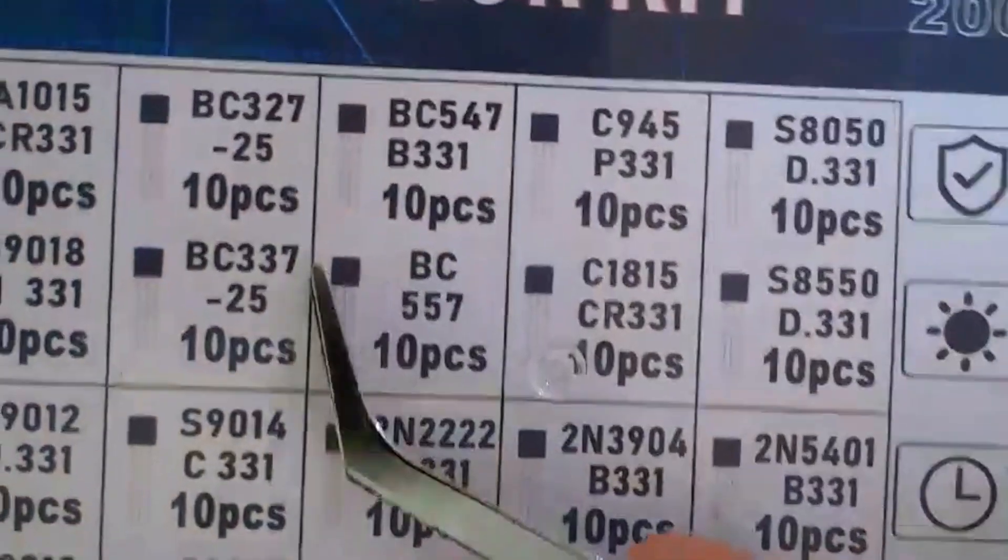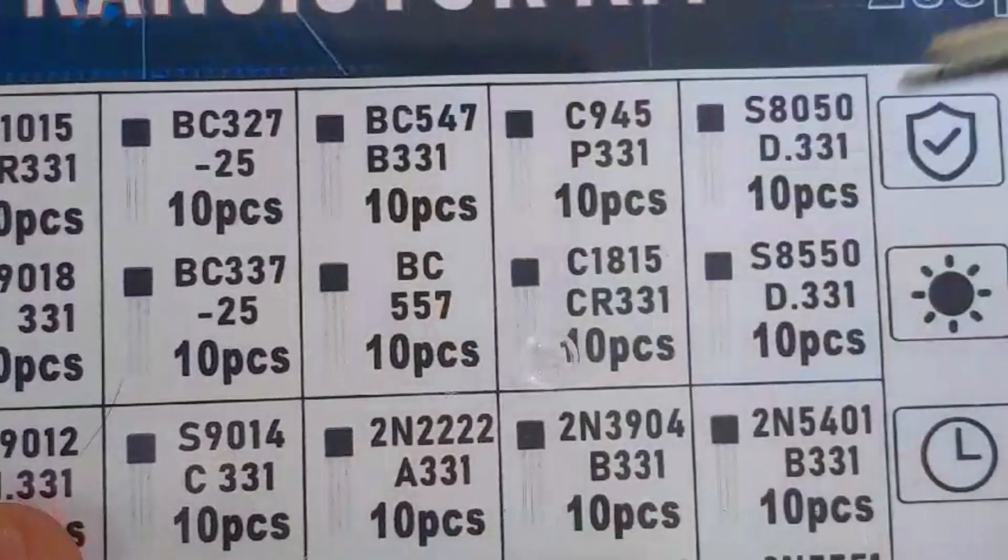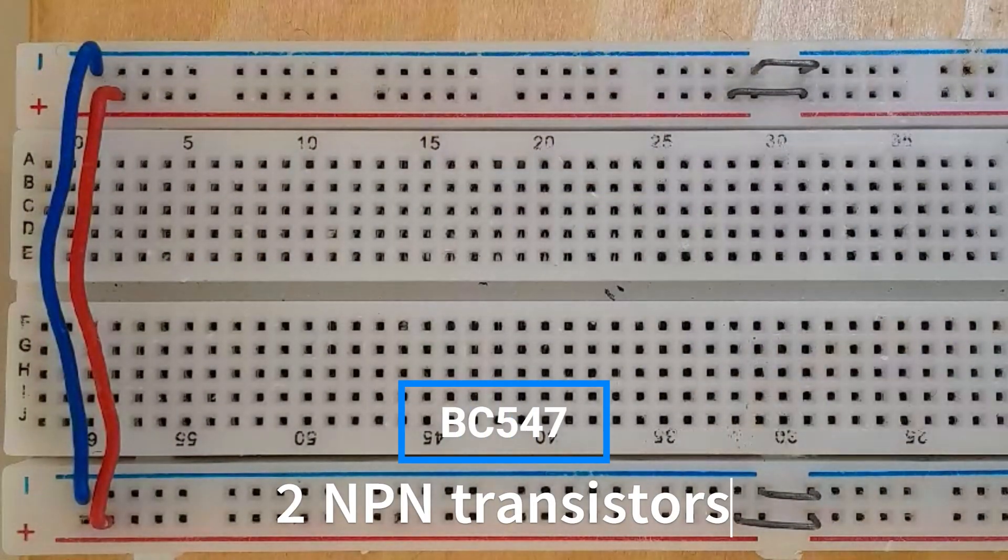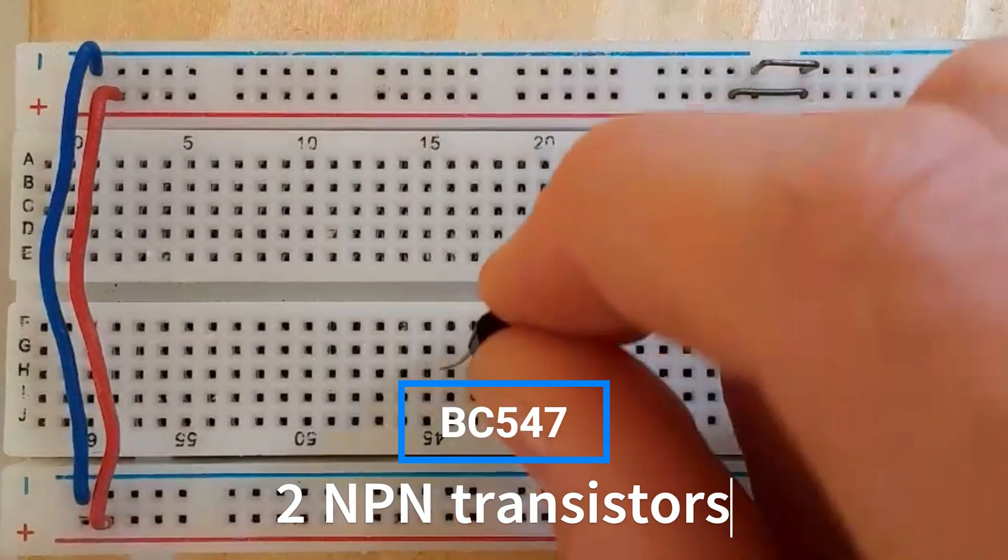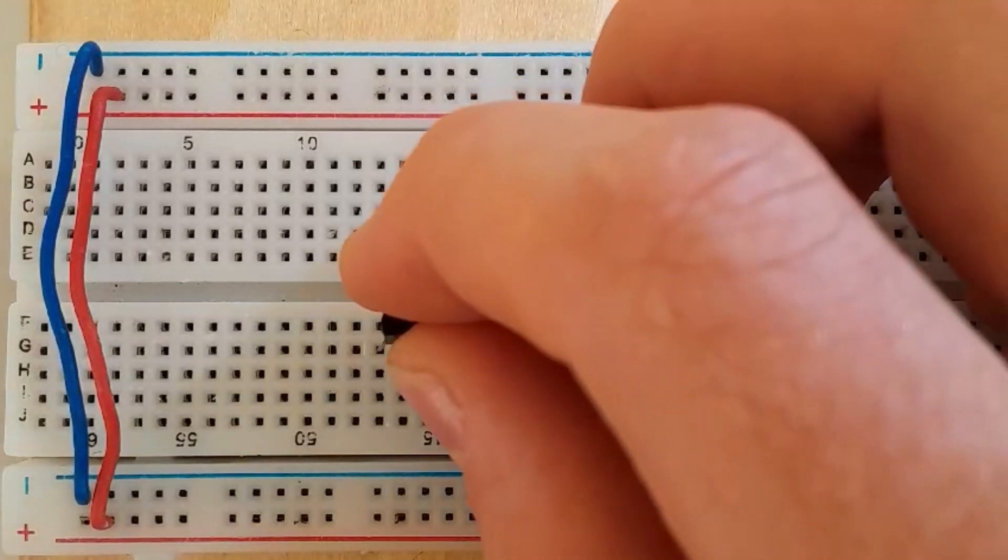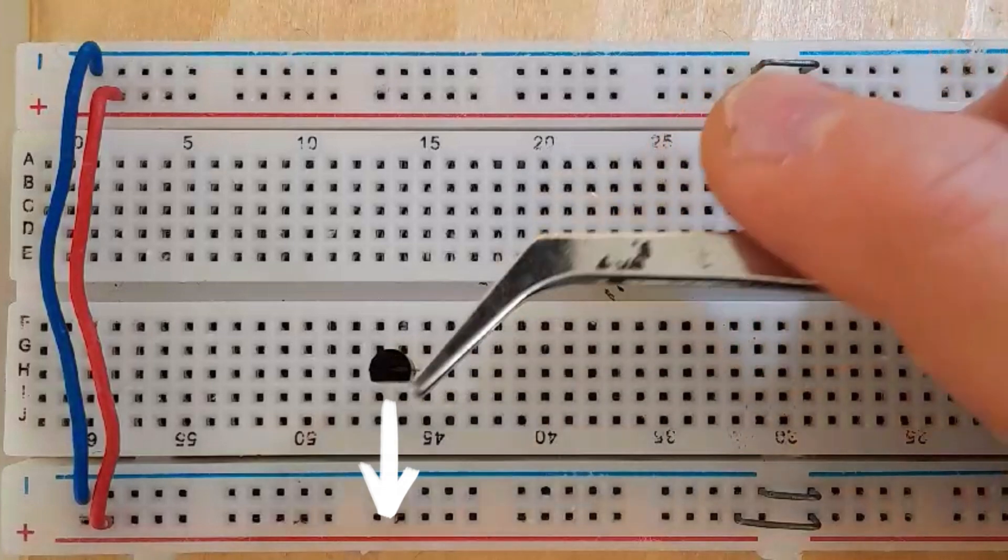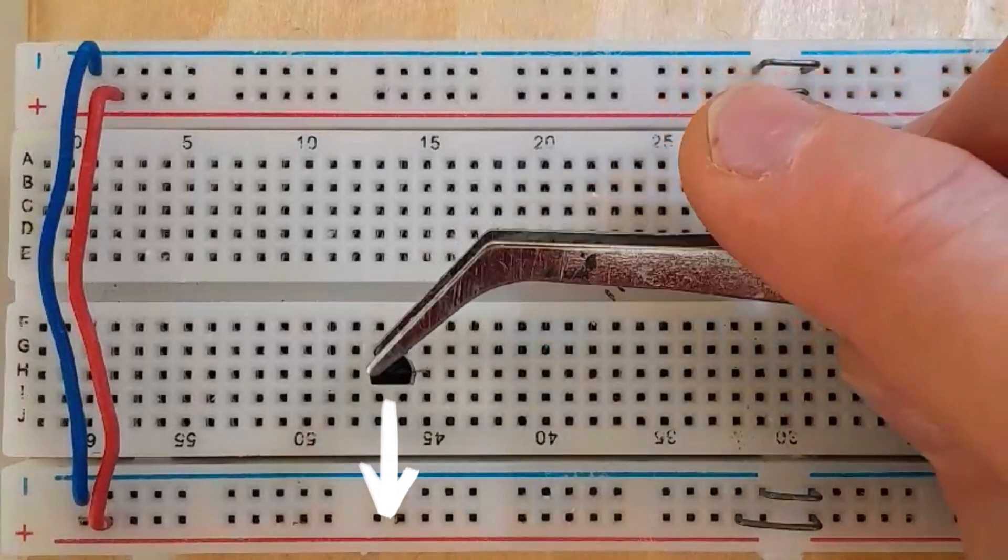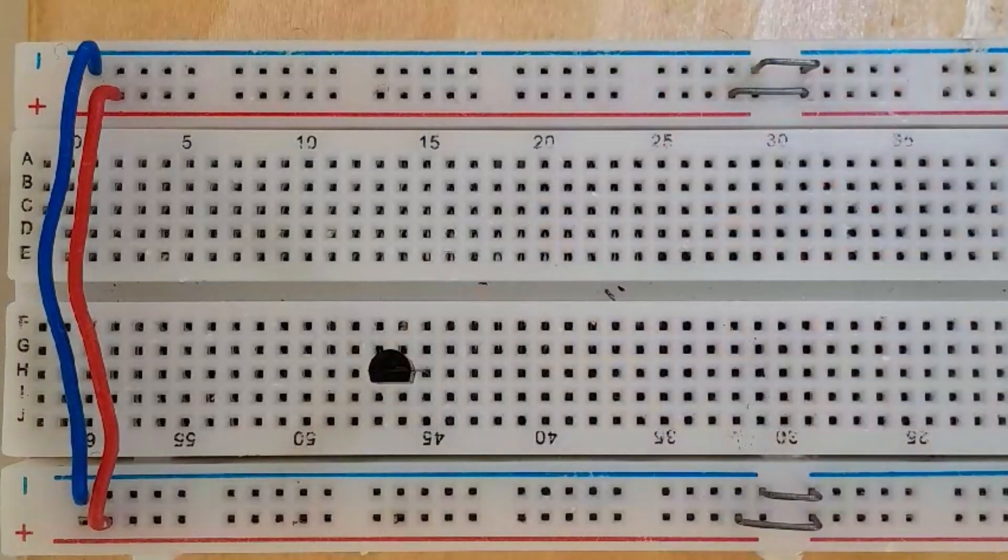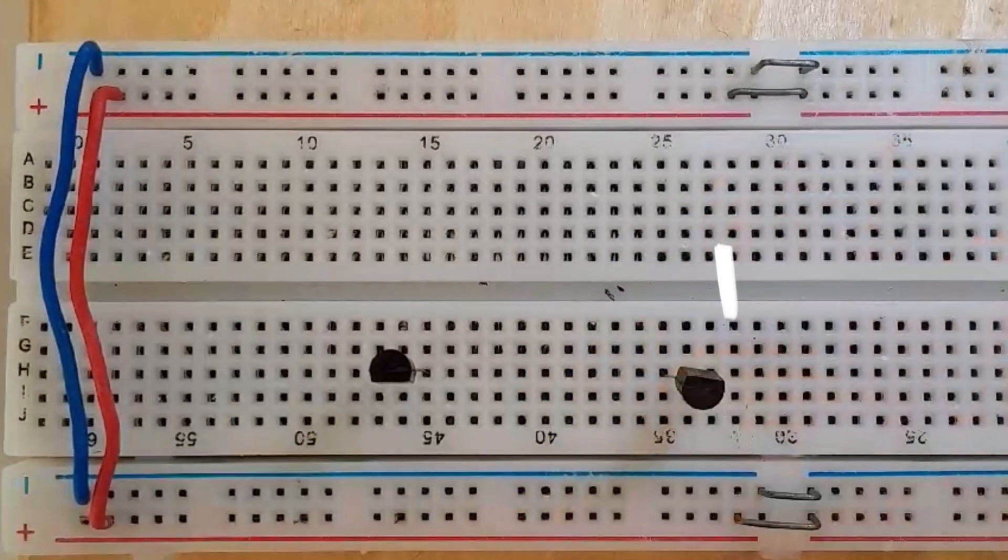We're beginning with the transistor. I'm using this one - it's an NPN transistor and it works on this circuit. You connect this transistor facing this way, you can see it by the circle. Now it's facing that way, and the other one must be facing the other side like this.